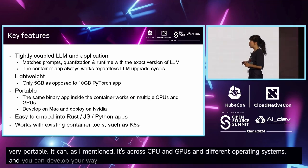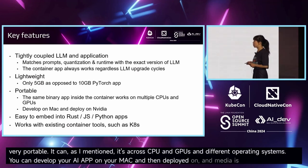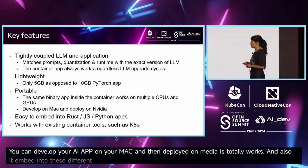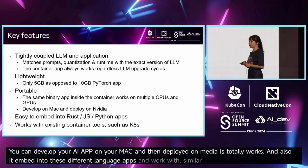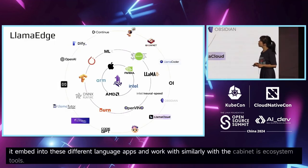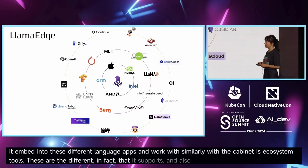You can develop your AI app on your Mac and then deploy it on NVIDIA — it totally works. It also embeds into different language apps and works similarly with Kubernetes ecosystem tools. These are the different infrastructure options it supports, along with different runtime backends and the AI apps built around them.